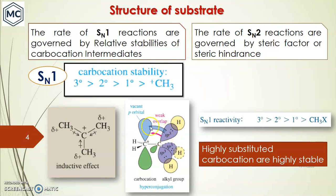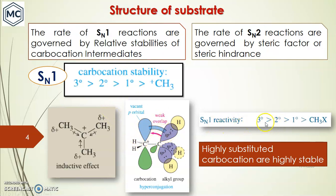In hyperconjugation, the interaction of C–H sigma electrons with the empty p orbital allows electron density to be donated to the empty orbital. In tertiary carbocation, there are nine beta hydrogens total across three alkyl groups. More electron density flows toward the carbocation, decreasing the positive charge and making it more stable. So the SN1 reactivity order is: tertiary > secondary > primary > methyl halide.